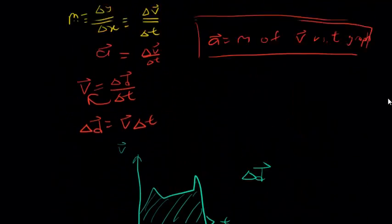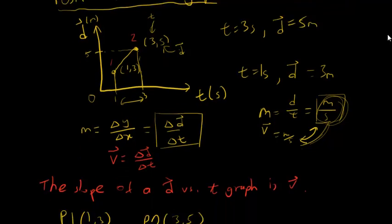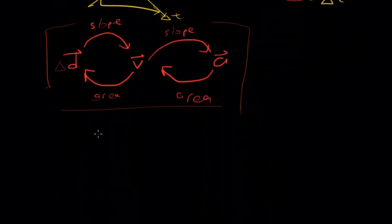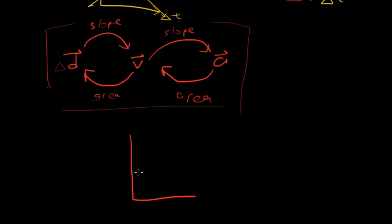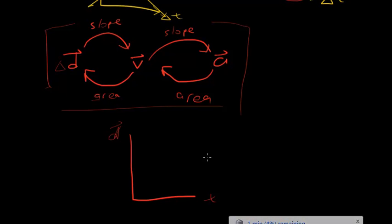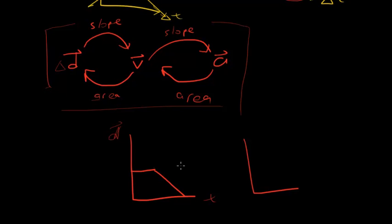That's basically it for objects with constant acceleration. In this lesson we dealt with objects with no velocity or constant velocity in displacement-time graphs — all linear. Next episode, we'll talk more about objects with acceleration, so we'll see curved graphs. Until then, see you next time — peace out.